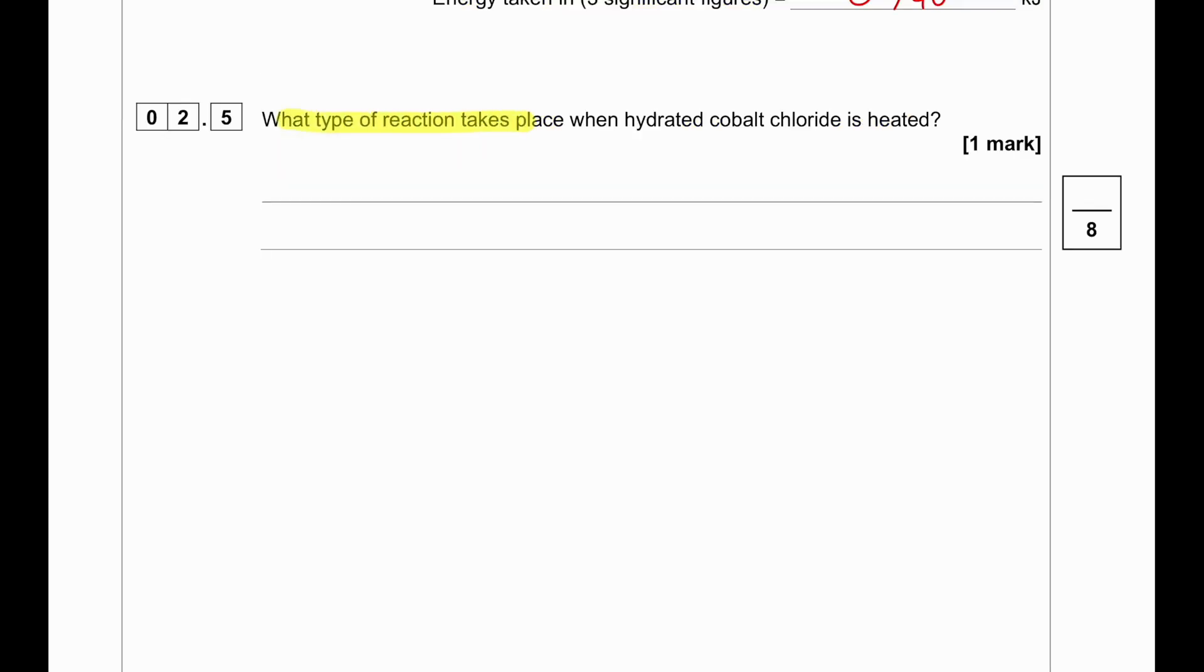What type of reaction takes place when hydrated cobalt chloride is heated? The heating of hydrated cobalt chloride is an endothermic reaction and it can also be considered like thermal decomposition. However, the term the examiner is looking for here is endothermic reaction because it absorbs heat.